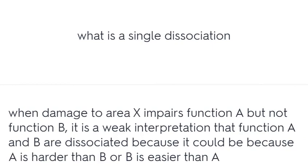What is a single dissociation? When damage to area X impairs function A but not function B. It is a weak interpretation that functions A and B are dissociated, because it could be because A is harder than B or B is easier than A.